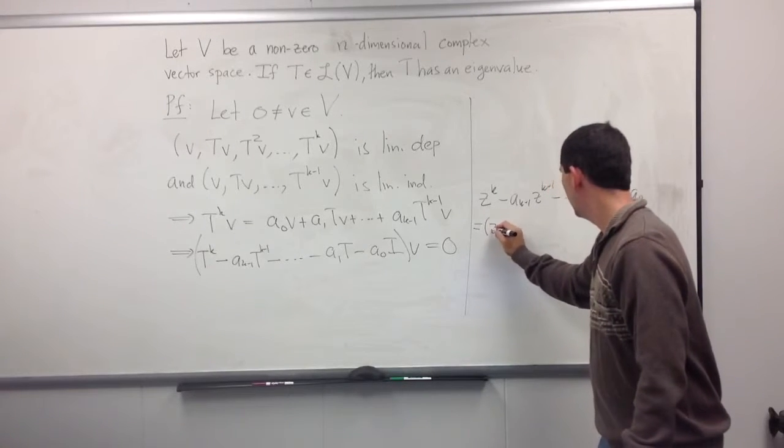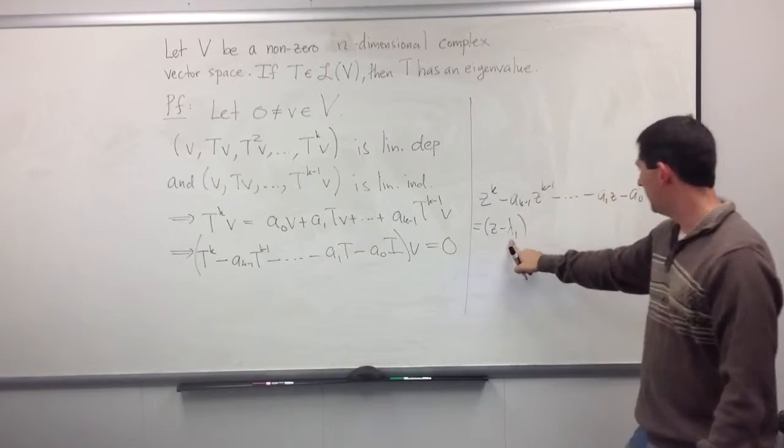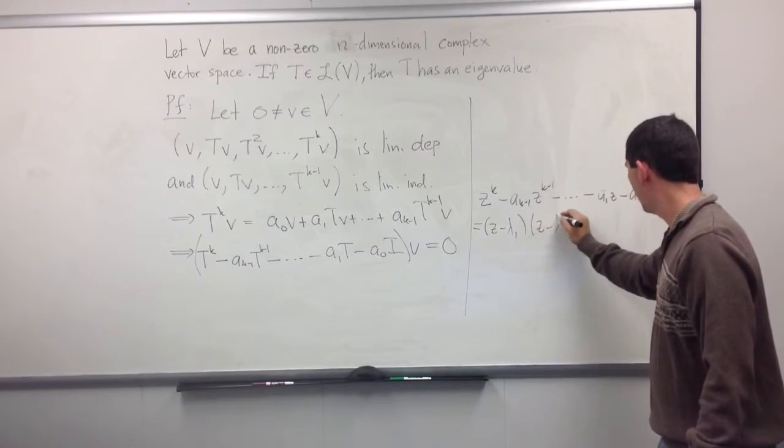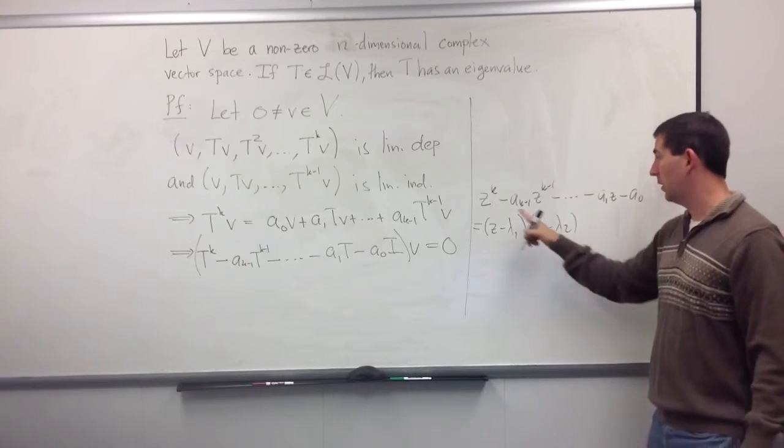So we can rewrite this as z minus... well, I'm just going to take here complex numbers, λ₁, λ₂. These are the roots of this polynomial.